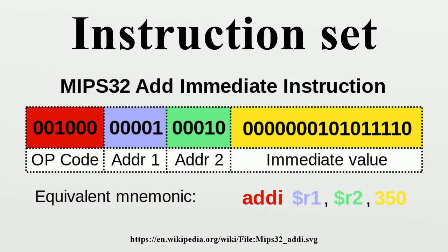Some instruction set designers reserve one or more opcodes for some kind of system call or software interrupt. For example, MOS Technology 6502 uses 00H. Zilog Z80 uses the eight codes C7, CF, D7, DF, E7, EF, F7, FFH, while Motorola 68000 uses codes in the range A000–AFFFH.